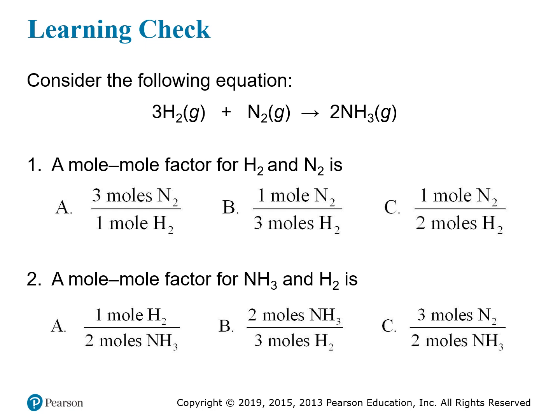Let's look at another example. Here we see the reaction between hydrogen gas and nitrogen gas to produce NH₃, which is a gas called ammonia. The equation is three H₂ plus one N₂ yields two NH₃ — remember, if there's no number in front, we assume it's a one. The questions are: what is the mole-to-mole factor between hydrogen and nitrogen, and the mole-to-mole factor between ammonia and hydrogen? Take a moment, pause this, and see if you can answer on your own.